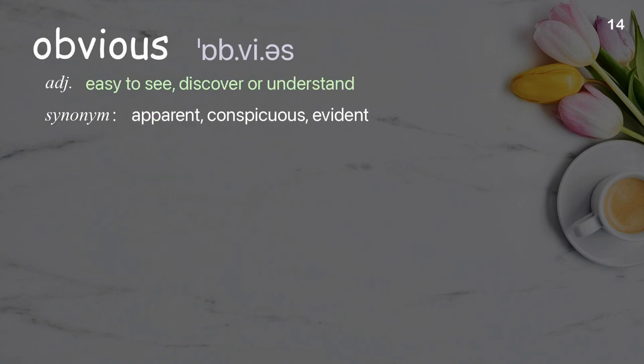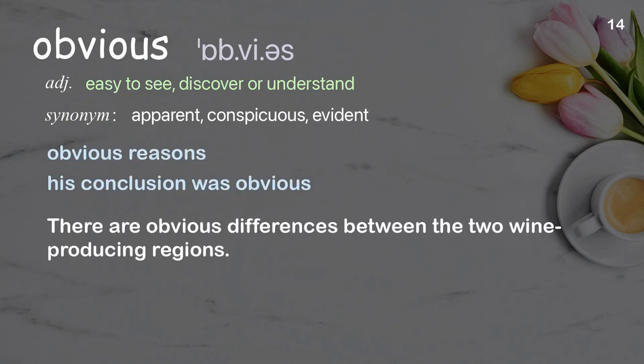Obvious: Easy to see, discover, or understand. Examples: Obvious reasons. His conclusion was obvious. There are obvious differences between the two wine-producing regions.